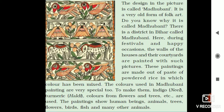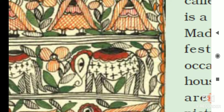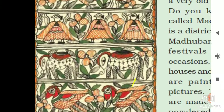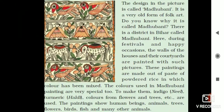In your book there is a drawing — this is Madhubani painting. If you look at it, there are animal figures, flowers, and lined patterns in these drawings. The design in the picture is called Madhubani. It is a very old form of folk art — art that all people of a particular area practice. From very old times, people have been making Madhubani paintings.